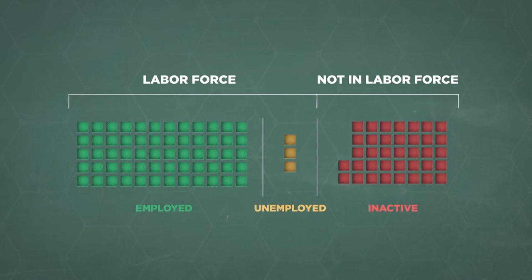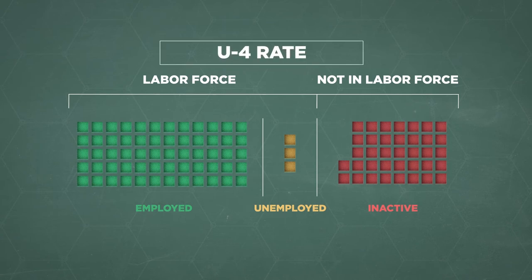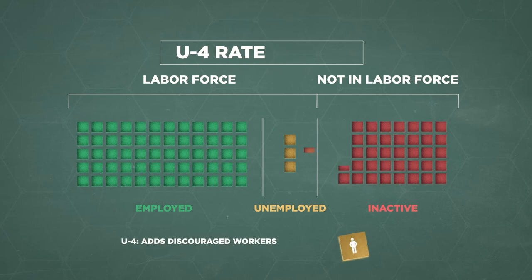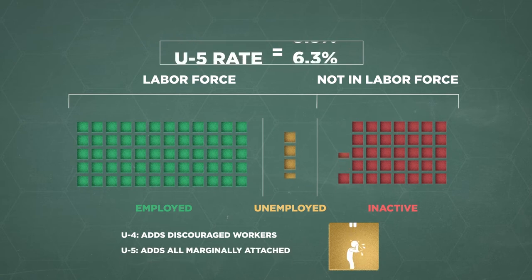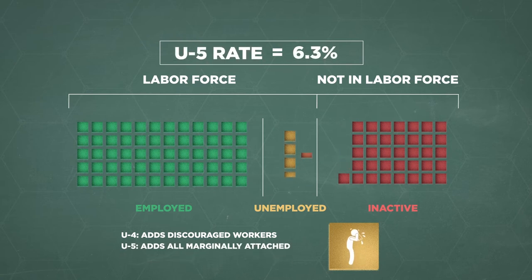The BLS knows the U3 rate isn't perfect, so there's also a U4 rate, which has a broader measure of unemployment. For this rate, the BLS adds in people who've stopped looking for work because of problems in the job market. There's even a U5 rate, which adds in anyone who's stopped looking for personal reasons like illness or issues with transportation.